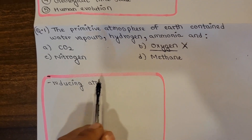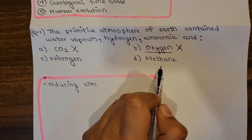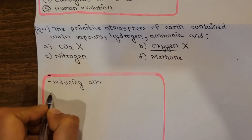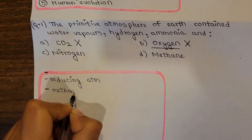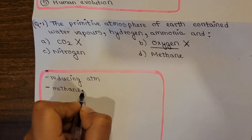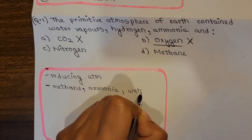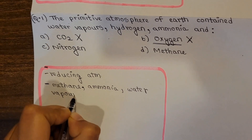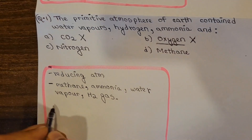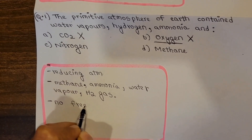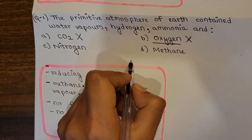So oxygen was not present in the primitive atmosphere. We won't consider CO2 either. Talking about methane — it was the chief gas present in the primitive atmosphere. We will always give preference to methane. Methane, ammonia, water vapor, and hydrogen gas were the gases found chiefly in the primitive atmosphere. There were no free oxygen atoms and no CO2. So the correct answer is methane.